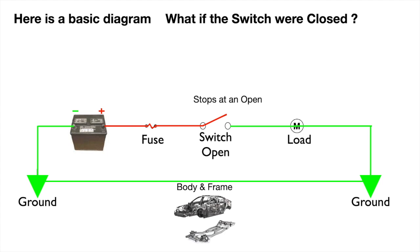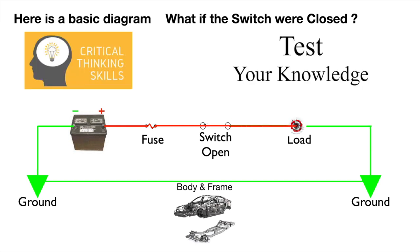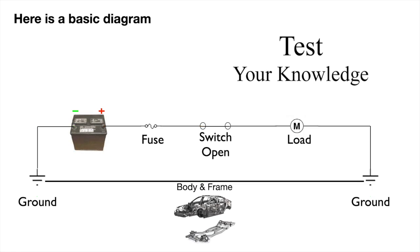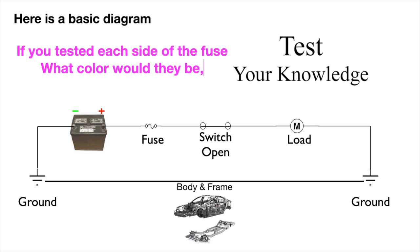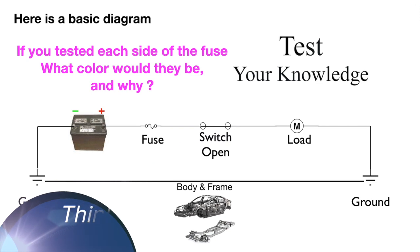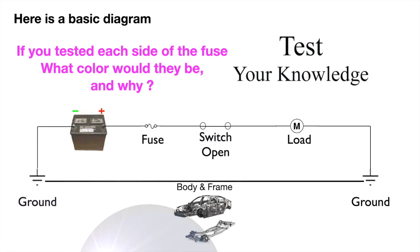Now back to our basic diagram. What if the switch were closed? Again, let's test our knowledge. If you tested each side of the fuse at this point, what color would they be and why? Well, red again because of continuity to the power source. Power is pushed through the fuse and the switch and was consumed by the load, where the force of that push would end and the voltage would drop to near zero. So the ground ends at the load.